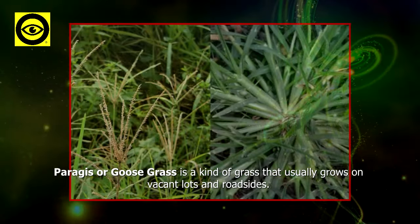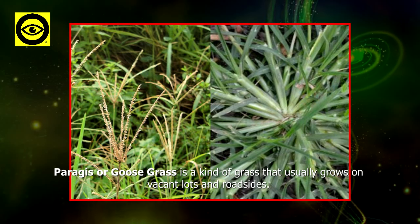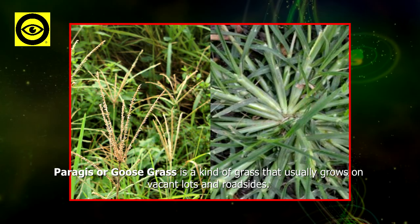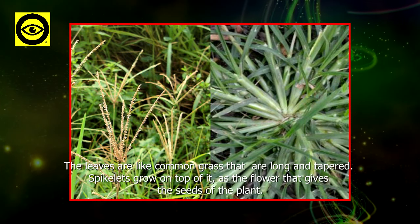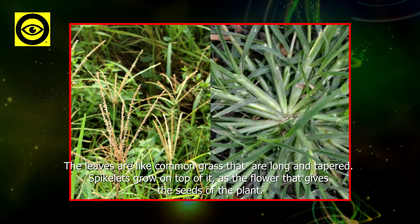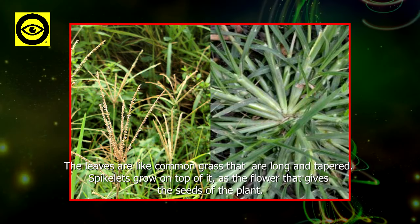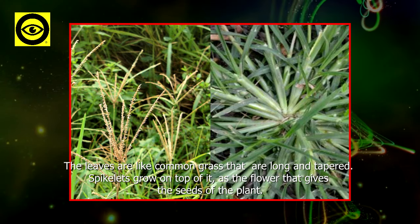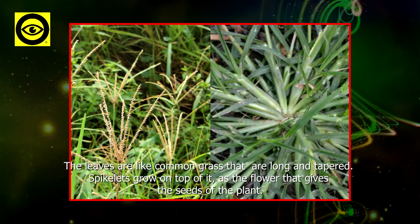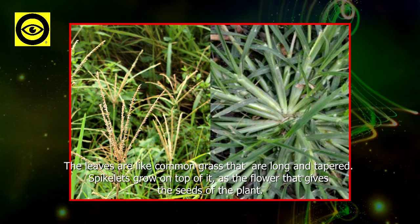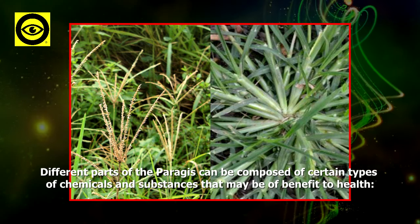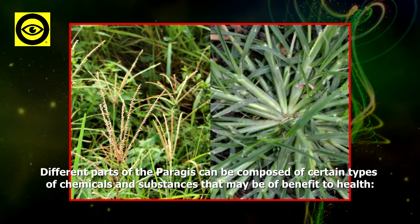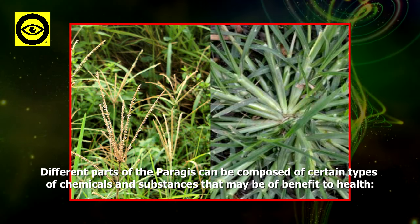Parages, or goose grass, is a kind of grass that usually grows on vacant lots and roadsides. The leaves are like common grass, not long and tapered. Spikelets grow on top as the flower that gives the seeds of the plant. Different parts of the parages can be composed of certain types of chemicals and substances that may be of benefit to health.